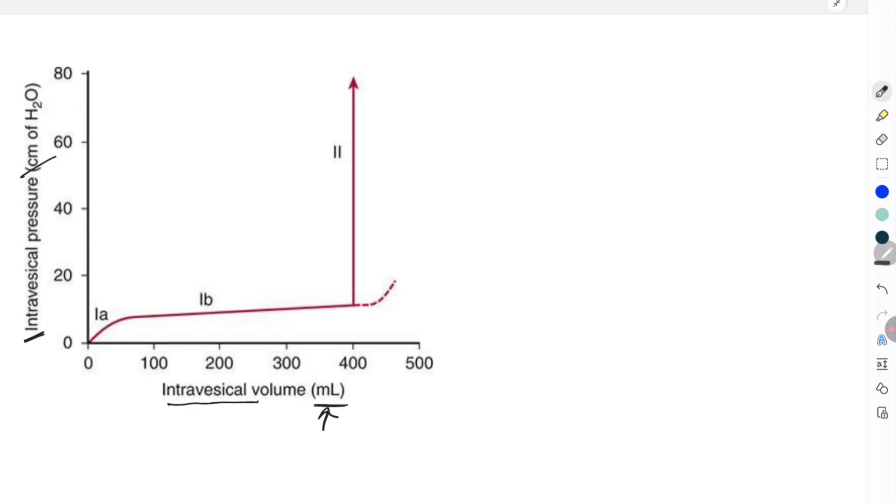Now when we plot this curve or graph we are going to get three parts. The first part is labeled as 1a, the second part is 1b, and the third part is 2.